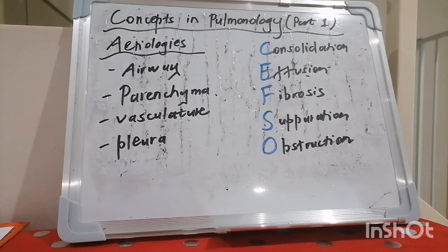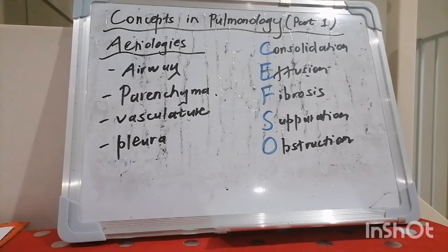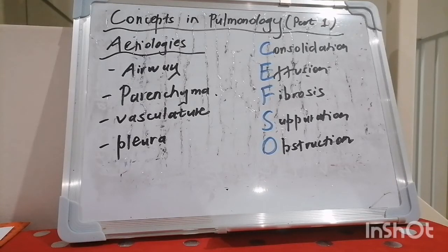Nosocomial pneumonia begins in non-intubated patients within 48 hours of admission. It is usually polymicrobial, with Staph aureus and Pseudomonas aeruginosa and Enterobacteriaceae like Klebsiella, E. coli, Serratia, Haemophilus, Acinetobacter, and viral causes like influenza as well.